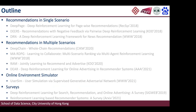The outline covers three groups of papers: RL for single scenario recommendations, RL for multiple scenario recommendations, and online environment simulators for RL-based recommendations, plus two survey papers. The first group studies user sequential behavior in one type of scenario, such as an e-commerce homepage. The second group studies sequential behavior across multiple scenarios, such as the homepage and shopping cart, and also covers multiple item types like recommendations and advertisements.